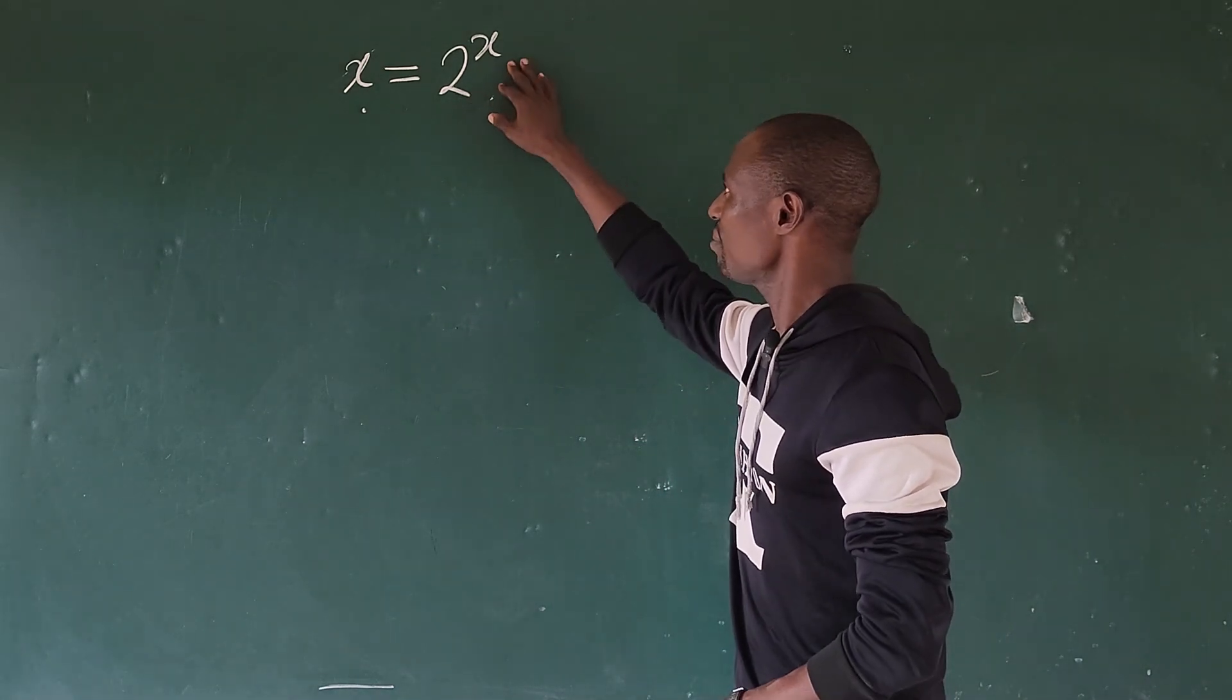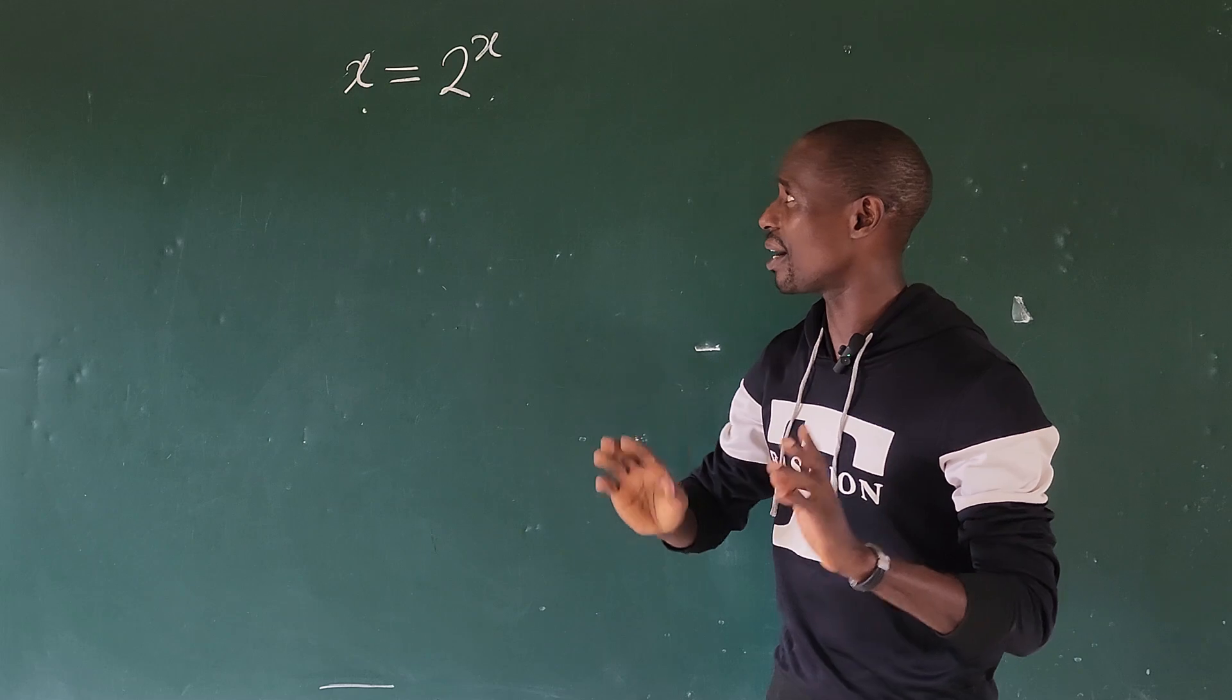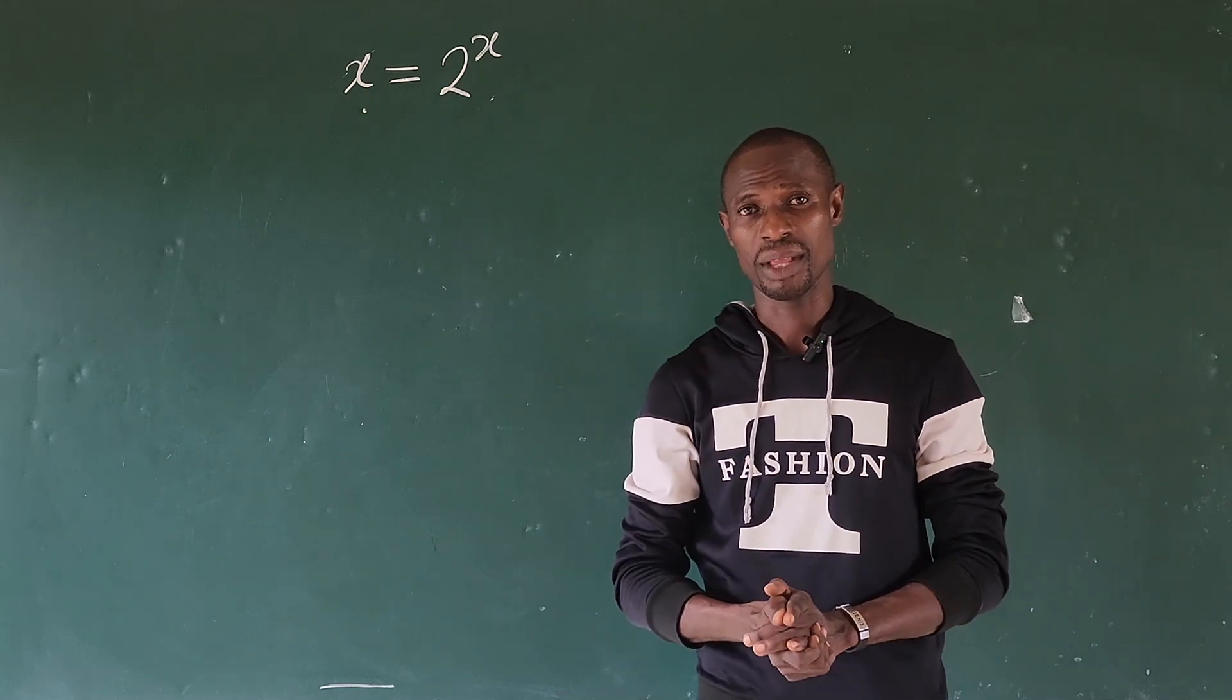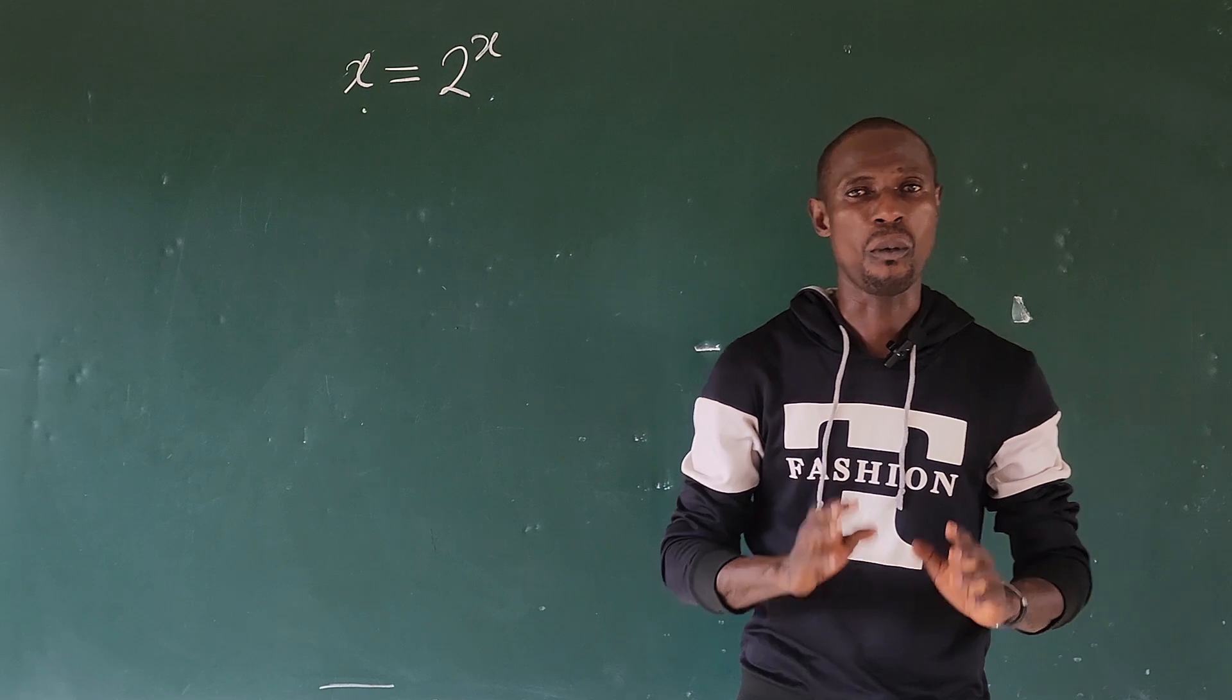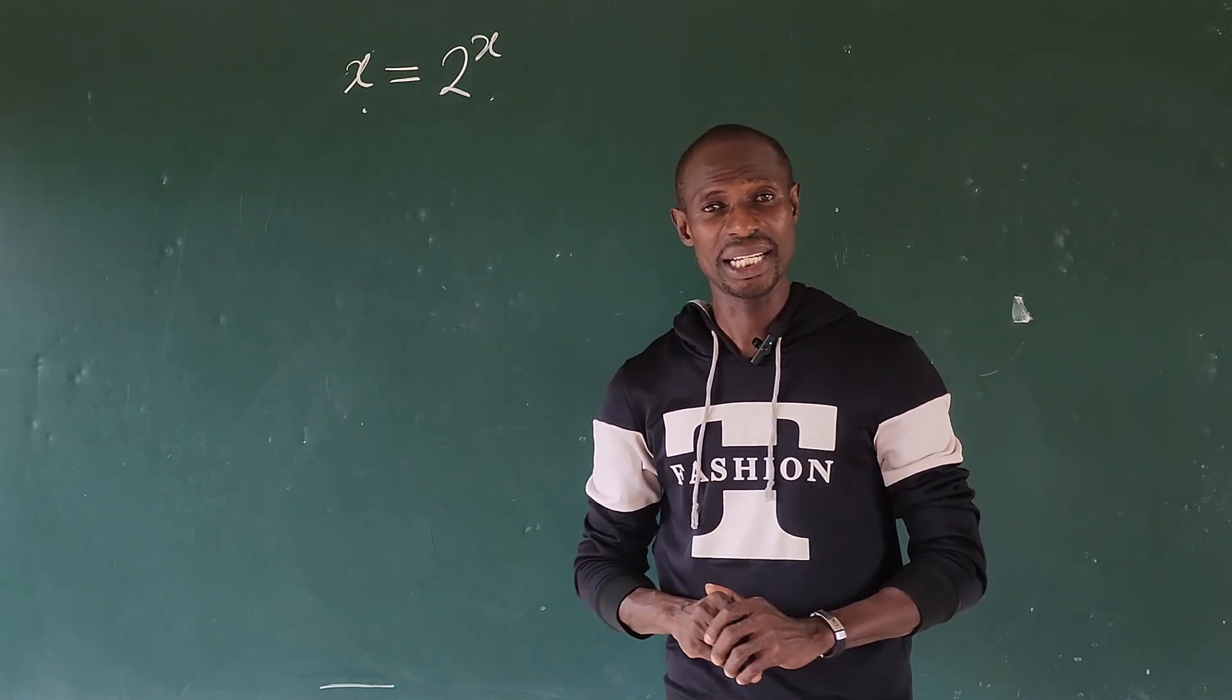Is there any number that we can put in place of x here that will give us 2 to that same number? I believe you cannot have a real route from the solution, but if it is imaginary route, let's solve and see what will be this imaginary route.